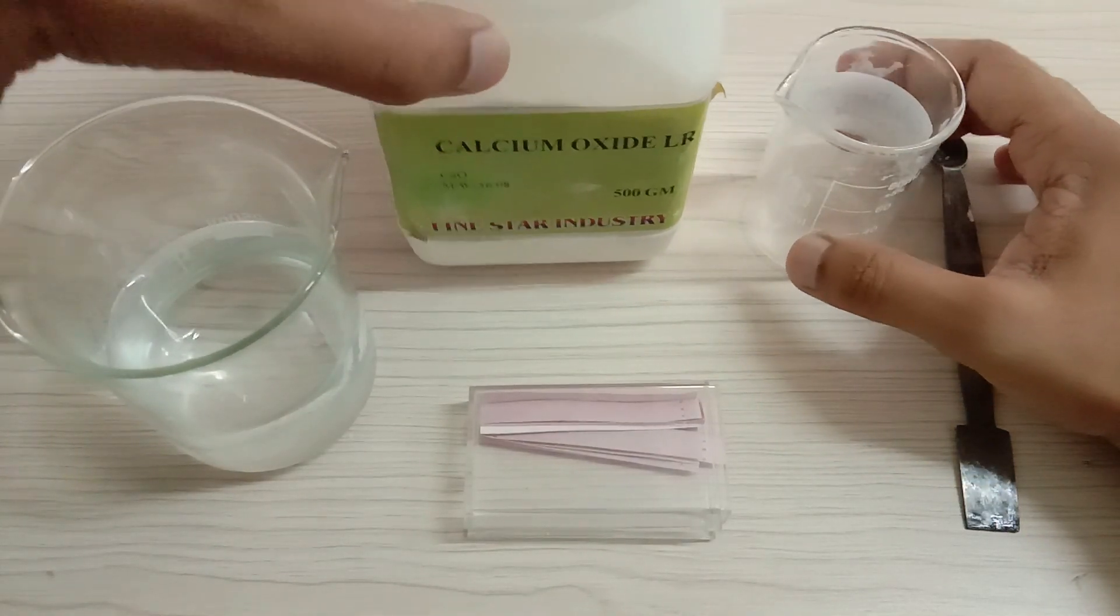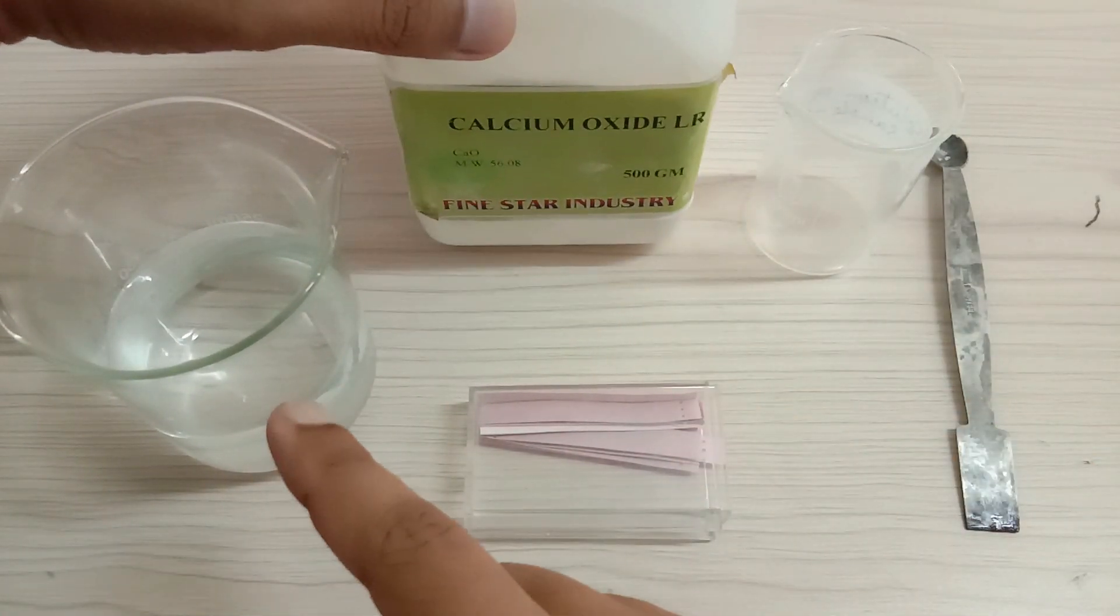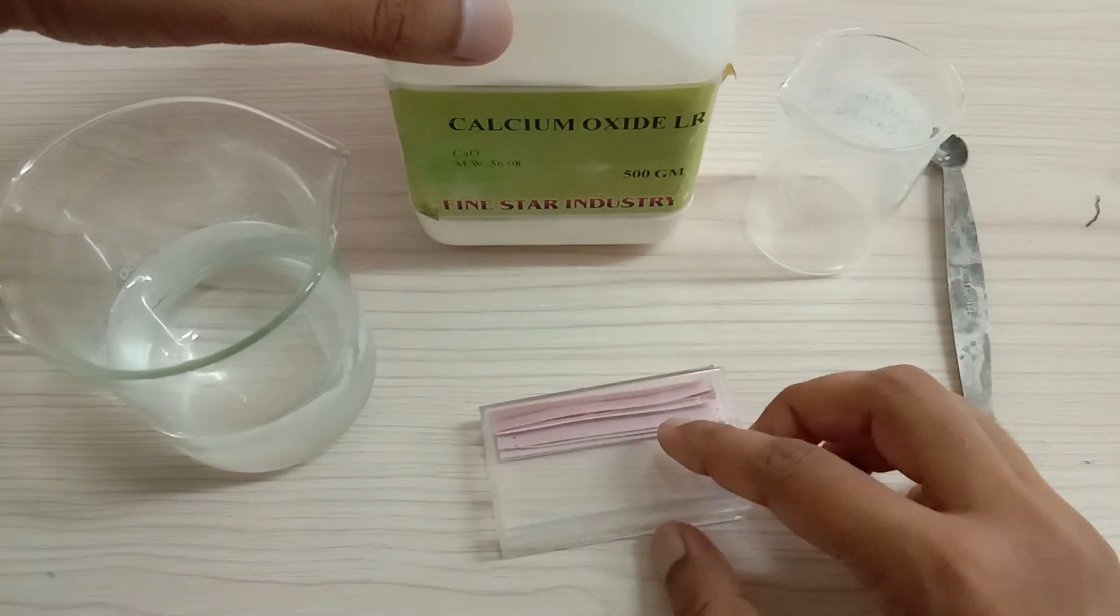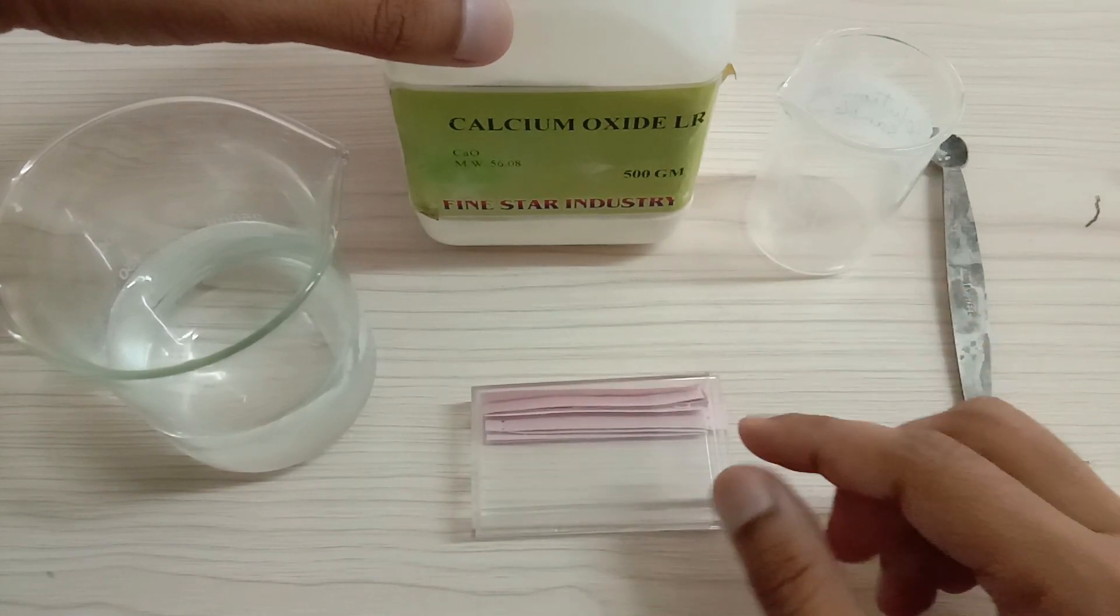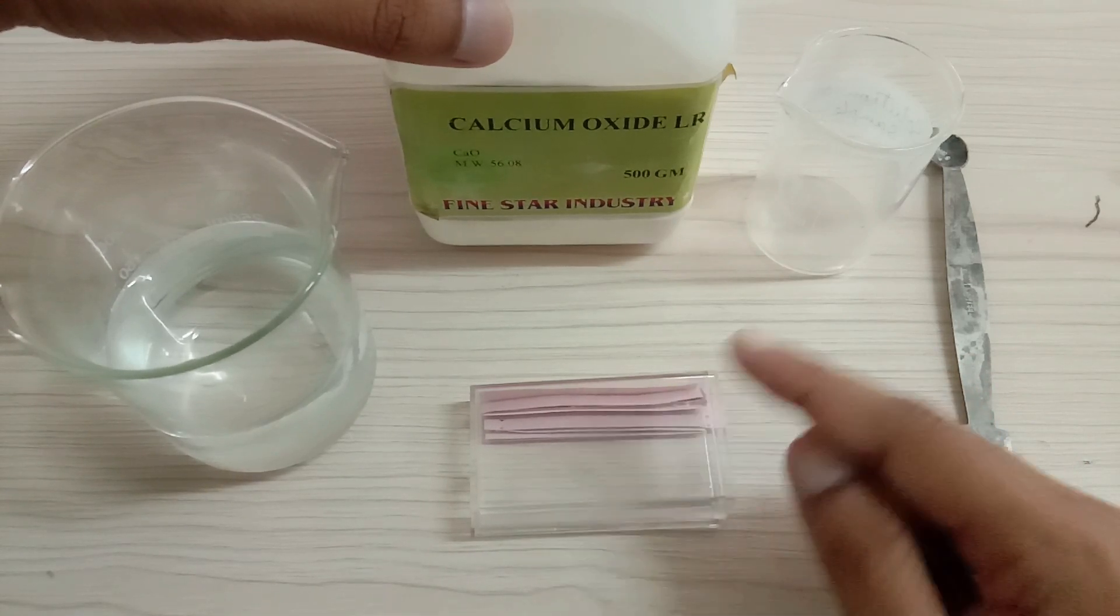For this experiment we require calcium oxide powder, that is CaO. We require some water, and I have some red litmus paper because after the base is formed, calcium hydroxide, the red litmus would turn blue.